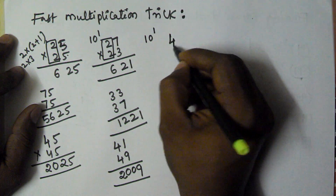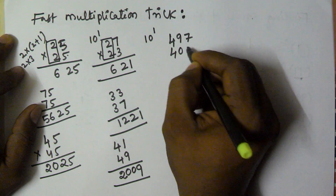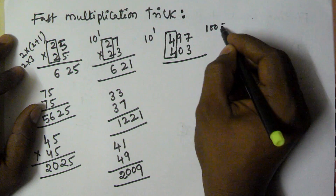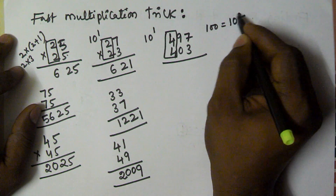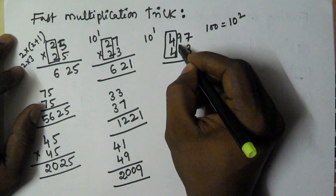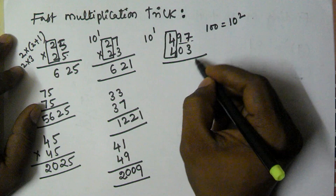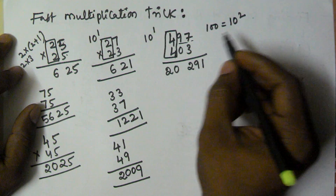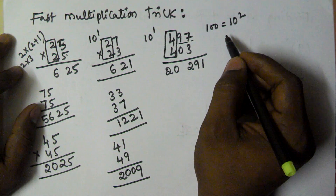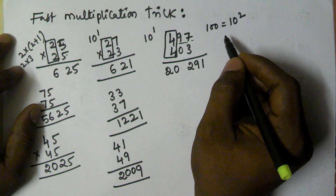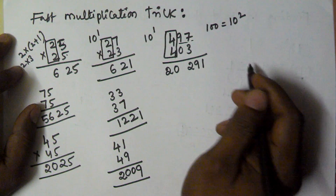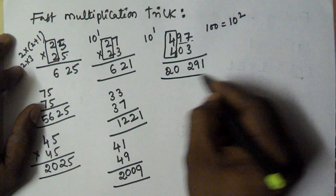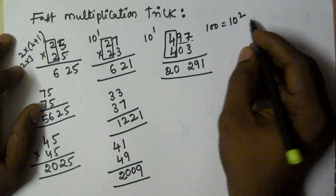Now extend this logic to three digits: 497 and 403. Here the leftmost digits are the same and the sum of the remaining digits is 100, which is 10 squared — also a power of 10. We multiply: 97 into 3 is 291, and 4 into 4 plus 1 is 4 into 5, which is 20. So the value of 497 into 403 is 200291.